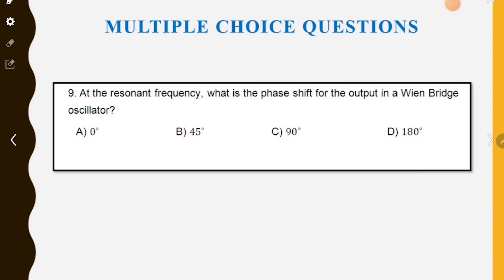Next MCQ: at the resonant frequency, what is the phase shift for the output in a Wien bridge oscillator? In a Wien bridge oscillator at resonant frequency, there is no phase shift. The phase shift is 0 degrees — that is the correct answer.